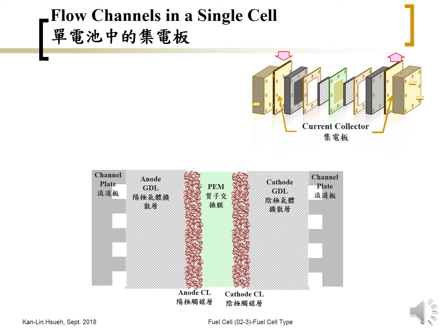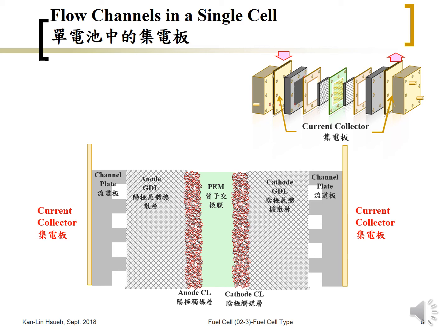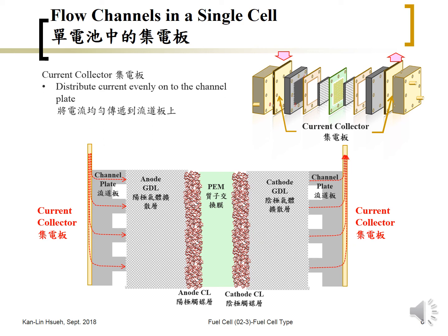So we need a current collector which is highly electronically conductive. The conductivity of copper may be more than a thousand to ten thousand times higher than the graphite or carbon plate. In this case, the current can flow evenly through the current collector to the channel plate, and the voltage drop or voltage loss on the current collector can be negligible. So a very high current can flow here and be more evenly distributed through the flow channel into the MEA and then going out. So the function of the current collector is to distribute current evenly onto the channel plate.